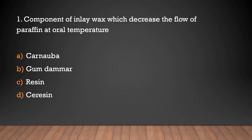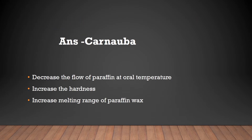Question: Which component of inlay wax decreases the flow of paraffin at oral temperature? Options: carnauba, gum dammer, resin, saracen. Answer: Carnauba. Properties of carnauba wax: it decreases the flow of paraffin at oral temperature, increases the hardness, and increases the melting range of paraffin wax.